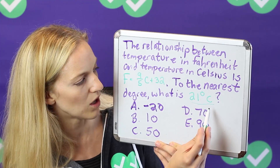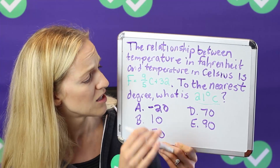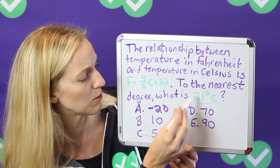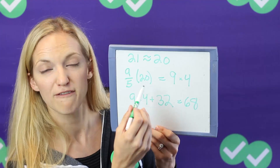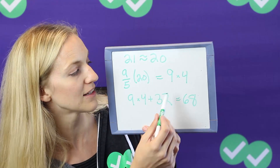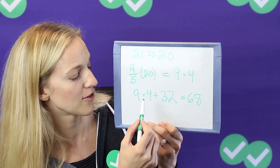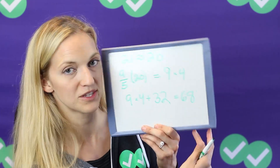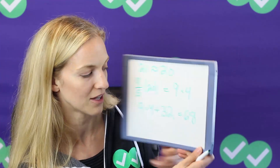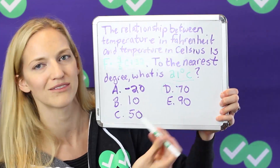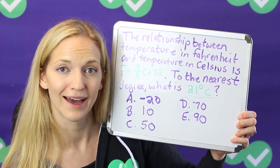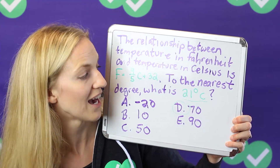We have 21 degrees, which is really close to 20. So if we approximate 21 as 20 and plug it into our equation: 20 divided by 5 equals 4, and 9 times 4 is 36, then we add 32 to get 68. Now because 20 is a little bit lower than 21, our answer will be a little bit lower than the true answer, which is 70. But there's nothing else even close — we have 50 and 90. So you might be able to do that in your head, which may be faster than using a calculator.